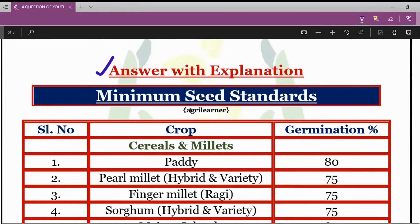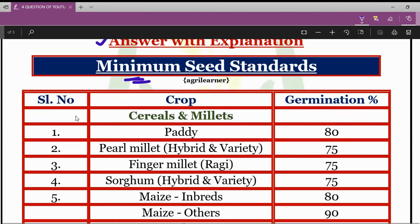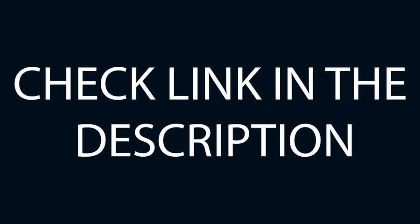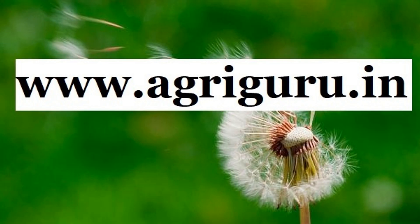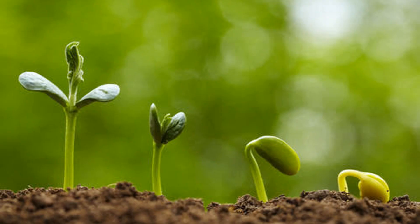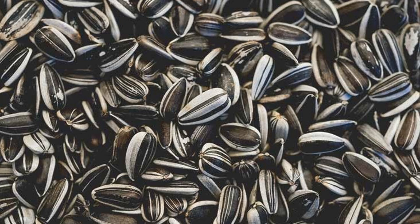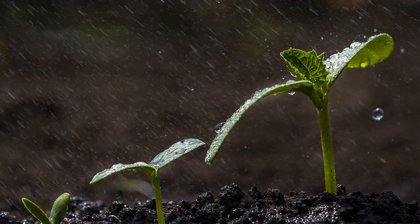We will also see the germination percentage of other important crops. You can visit our course and website — the link is in the description box — AgriGuru.in. In the seed science section, we have not only germination percentage, but also physical purity percentage and moisture percentage for various crops in tabular form.